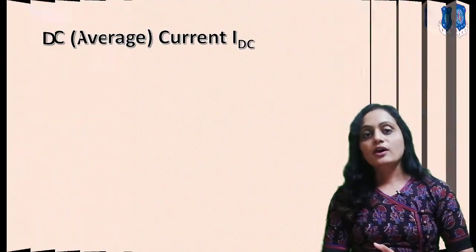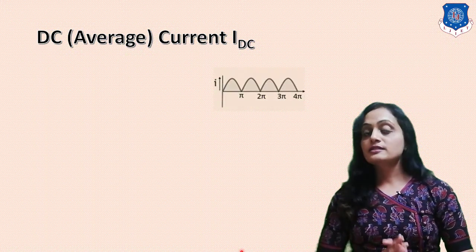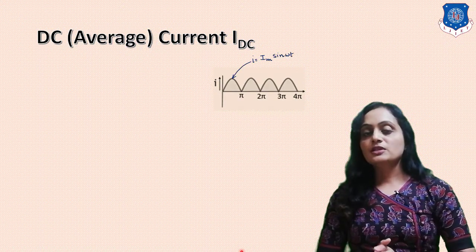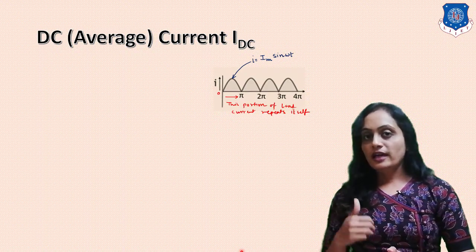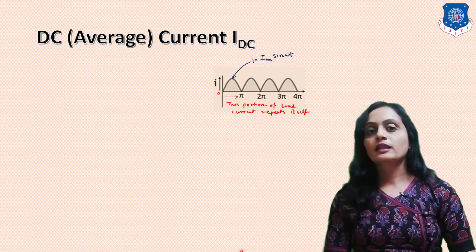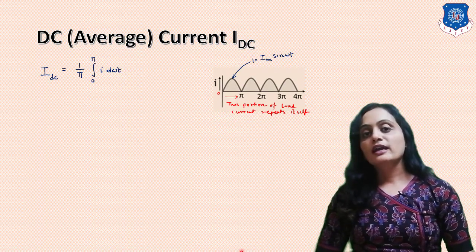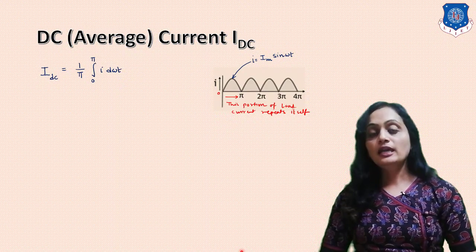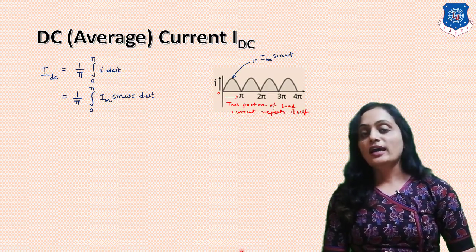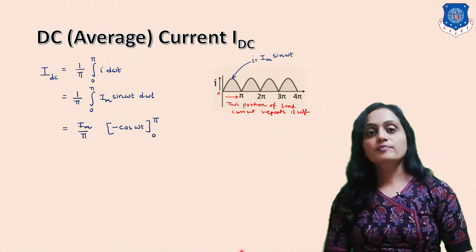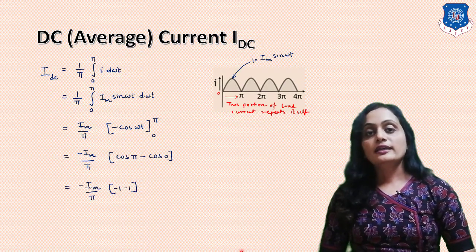Now we will find the DC or average value of the current, following the same steps. The output current signal is sinusoidal, represented by Im·sin(ωt), and the portion from 0 to π is repeated. Using this repetitive portion, Idc = (1/π) · ∫₀^π I d(ωt). Substituting I = Im·sin(ωt) and integrating, we get Idc = 2Im/π.